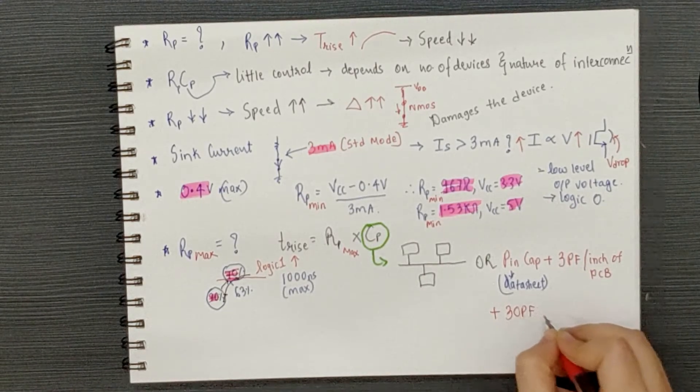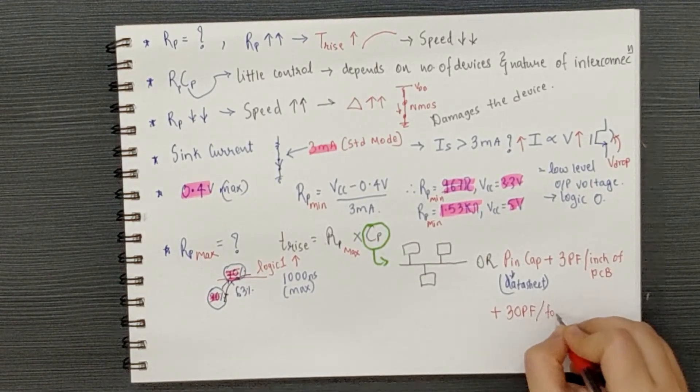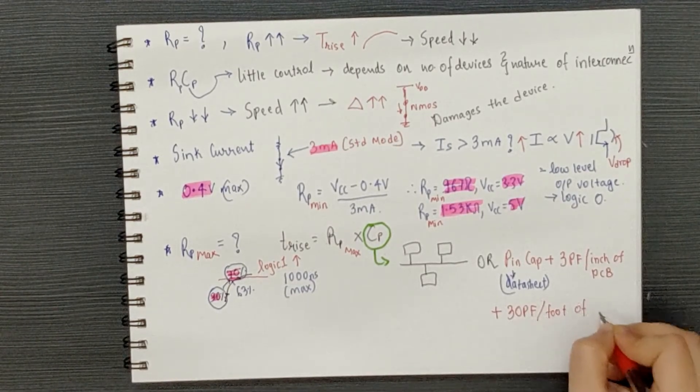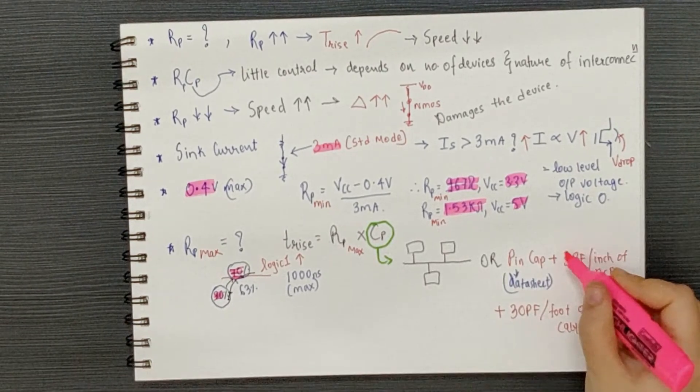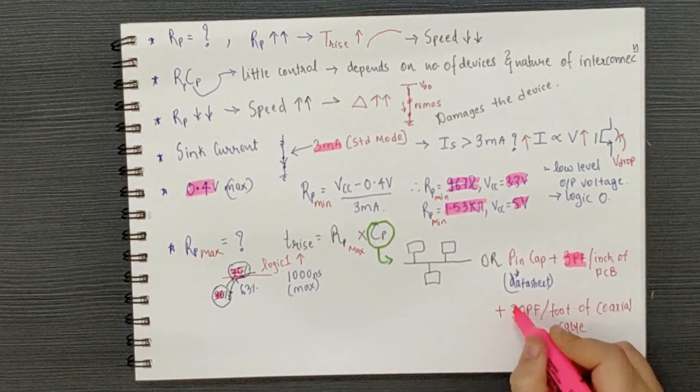Then, 3 pF per inch of PCB trace and 30 pF per foot of coaxial cable should be added to this number. Now, I didn't find these numbers magically. They're provided in a PDF and the link to that is in the description below.